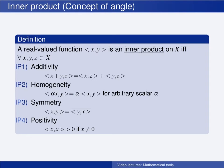The function also needs to have the symmetry property, that the inner product between x and y is the complex conjugate of the inner product between y and x. And finally, the inner product of an element with itself is strictly positive, as long as it is not the zero element. In the latter case, the inner product would be zero.